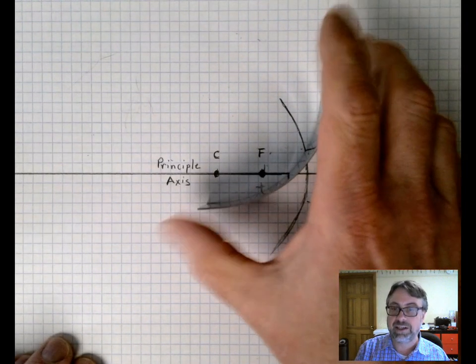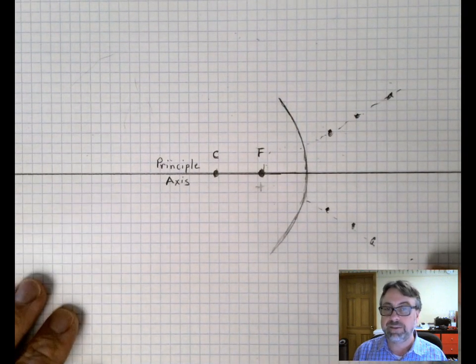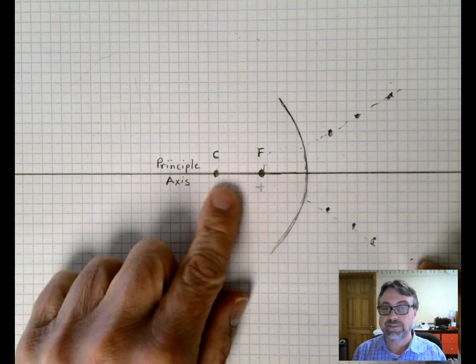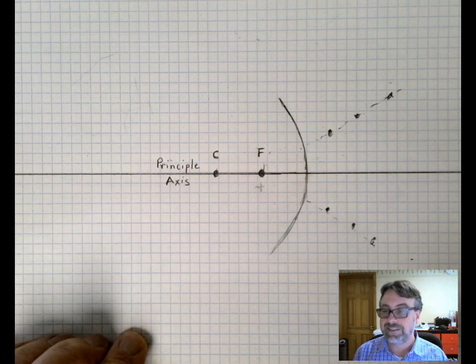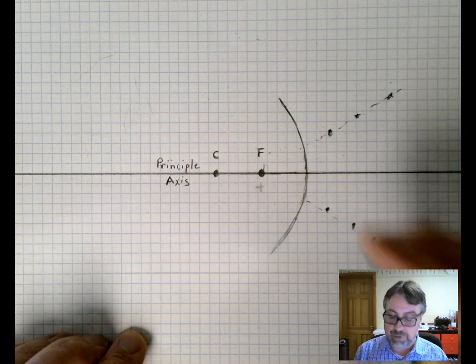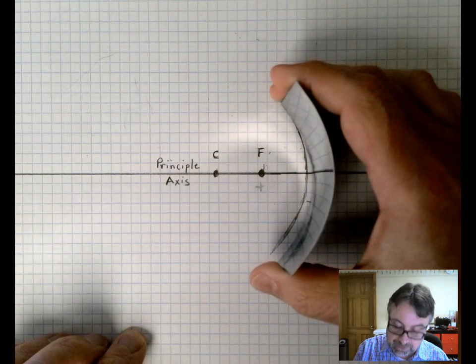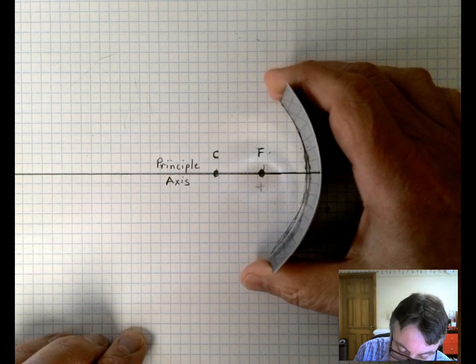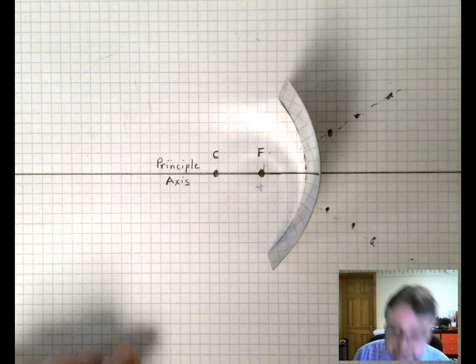So what I've done here on the paper is I've labeled the principal axis which is the center line of the mirror and I've traced out where the mirror should be so it's all lined up with the center line. So let me take a moment to place the mirror down.